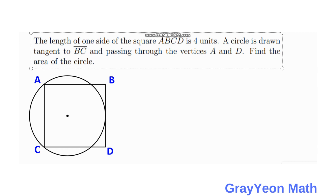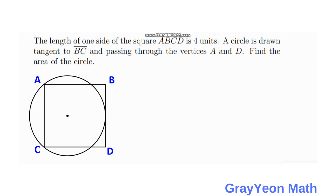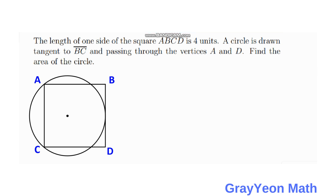Welcome to Green World Math. We are asked to solve for this problem: the length of one side of the square A, B, C, D is 4 units. A circle is drawn tangent to BC and passing through the vertices A and D. Find the area of the circle.